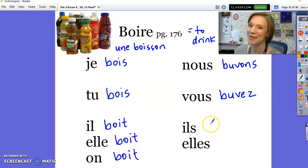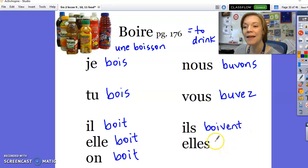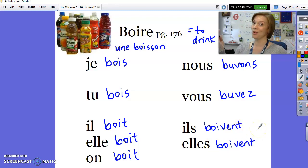And now ils and elles. Guess what they do? They go right on back to bois. But now it's boivent. V-E-N-T. Elles boivent.